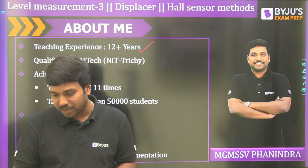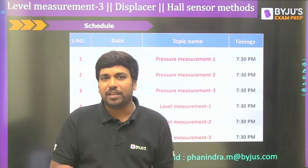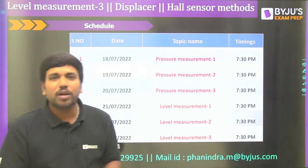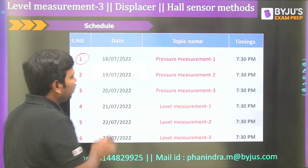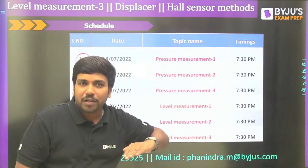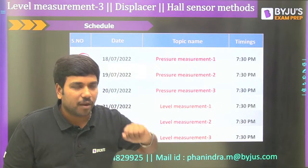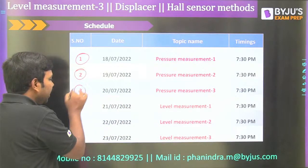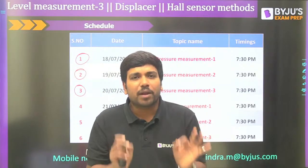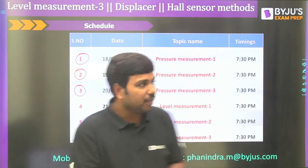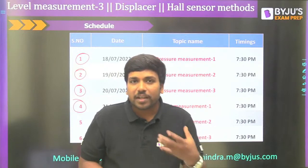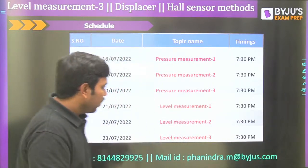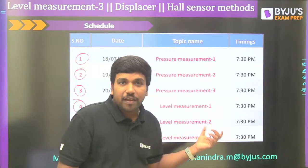Before going to today's session, let me give the schedule of the previous lectures so that if any of you missed any lectures related to pressure or level measurement, you can go through them. Our Monsoon Special Series started with the first lecture on pressure measurement, where I discussed the barometer, piezometer, and similar concepts. In the second lecture, I explained low-pressure gauges like the Pirani gauge and thermocouple gauge. In the third lecture, I explained the McLeod gauge and differential pressure transmitter basics. In level measurement, I covered various techniques including the differential pressure gauge and transmitter. In the previous lecture, we discussed ultrasonic techniques, echo-based techniques, and radiation techniques.